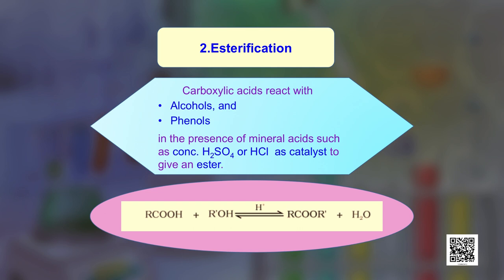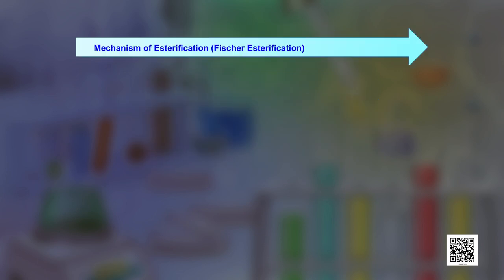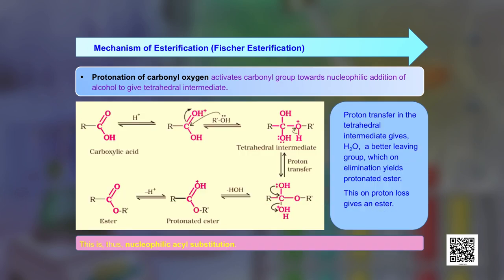The mechanism of esterification involves: first, protonation of the carbonyl oxygen, which activates it towards nucleophilic addition of the alcohol to give a tetrahedral intermediate. A proton transfer then occurs, giving water as a better leaving group instead of OH⁻. Water then leaves the tetrahedral intermediate to give a protonated ester, which on loss of a proton yields the ester. This is a nucleophilic acyl substitution reaction.